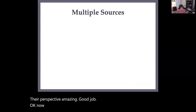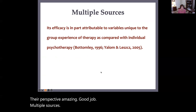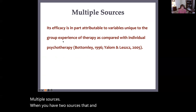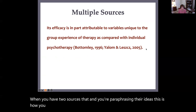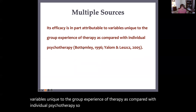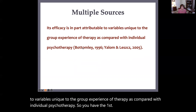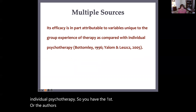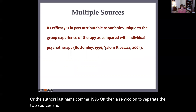Now, multiple sources. When you have two sources and you're paraphrasing their ideas, this is how you cite in a parenthetical citation: 'Its efficacy is in part attributable to variables unique to the group experience of therapy as compared with individual psychotherapy.' Then you have the first author's last name, comma, 1996 — then a semicolon to separate the two sources — then the second citation's author and date.